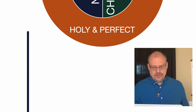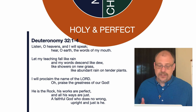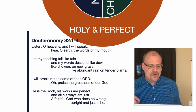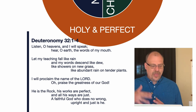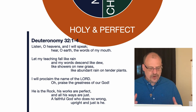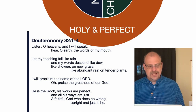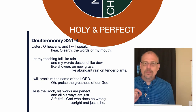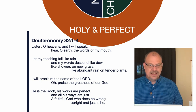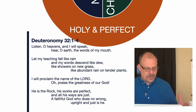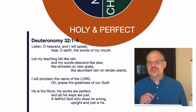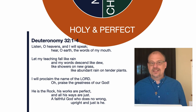We're going to look at Deuteronomy chapter 32, verses 1 to 4. In it, we read these words: "Listen, O heavens, and I will speak. Hear, O earth, the words of my mouth. Let my teaching fall like rain, and my words descend like dew — like showers on new grass, like abundant rain on tender plants. I will proclaim the name of the Lord. O praise the greatness of our God. He is the rock. His works are perfect and all his ways are just. A faithful God who does no wrong. Upright and just is he."